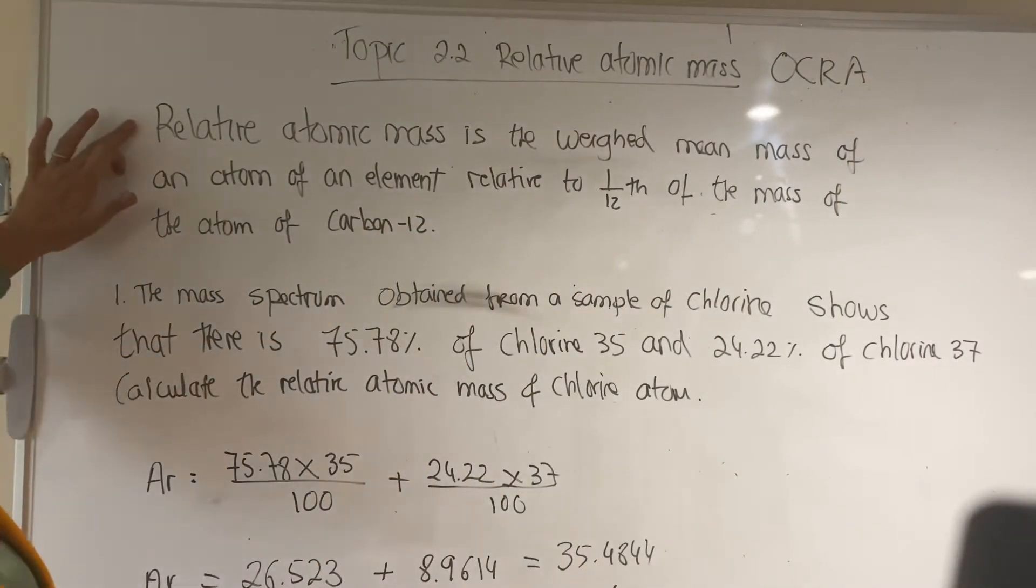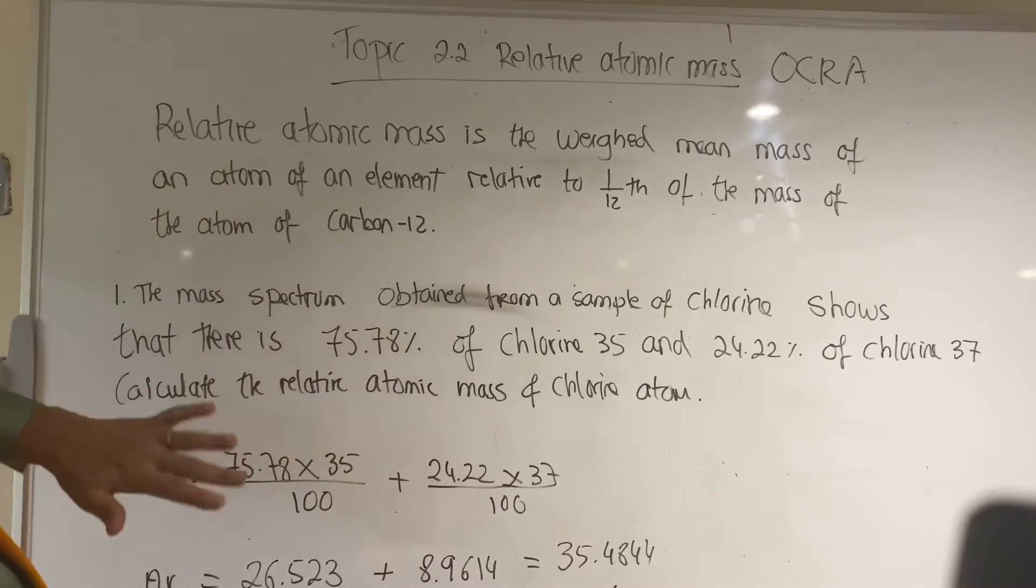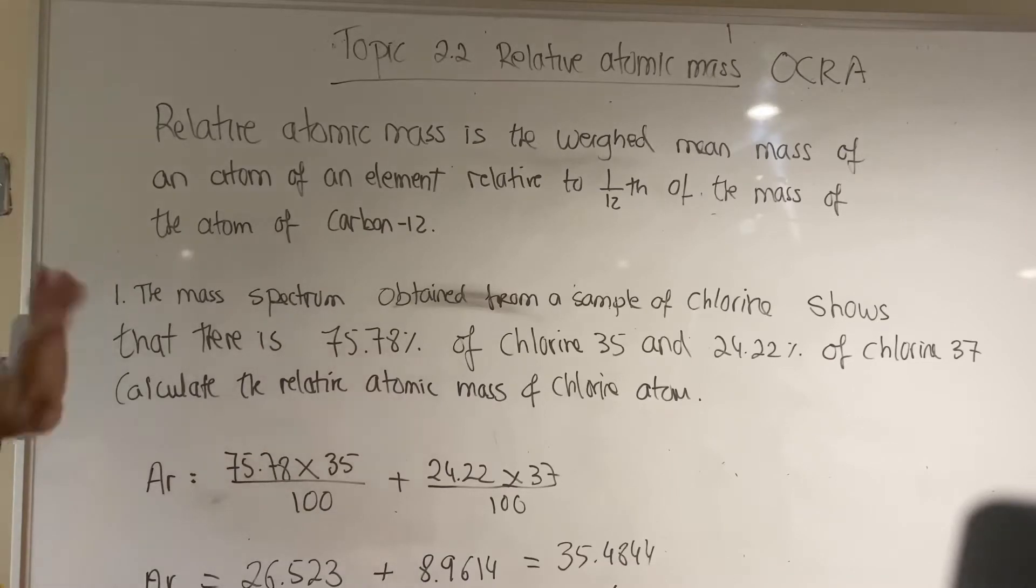The definition of relative atomic mass is the weighted mean mass of an atom of an element relative to one-twelfth of the mass of the atom of carbon-12. So that's the definition.